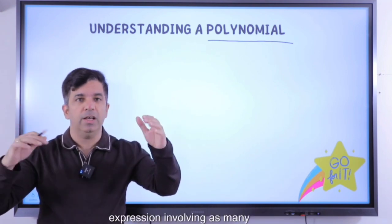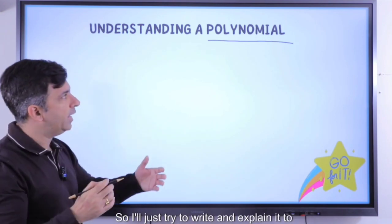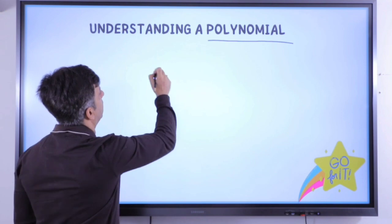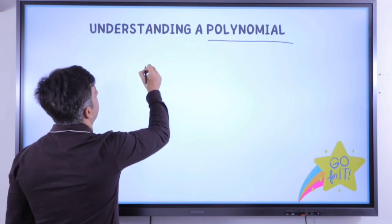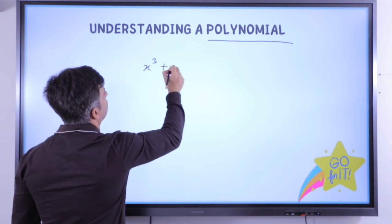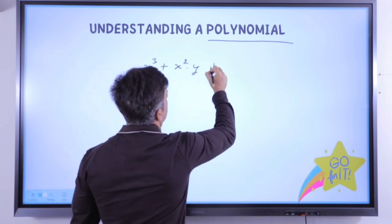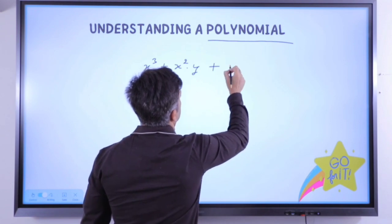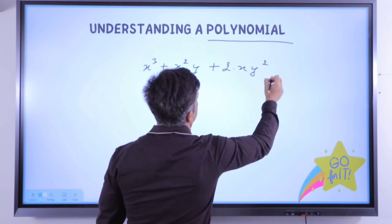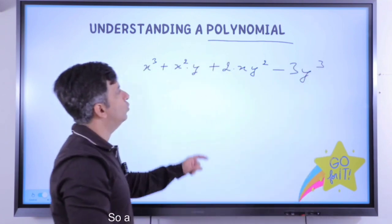A polynomial is simply an algebraic expression — just think of it as a simple algebraic expression involving as many variables as needed. For example: x³ + x²y + 2xy² − 3y³. This is a polynomial involving two variables, x and y.